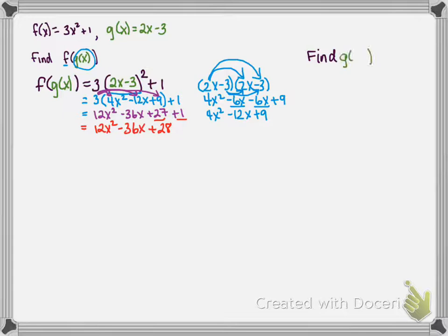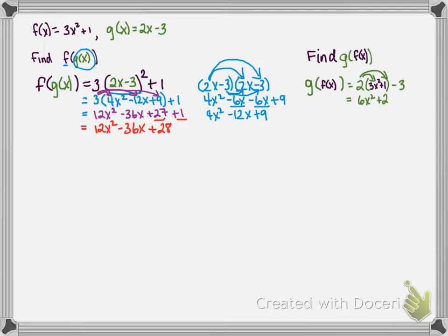Let's find g of f of x. Here we start with the g function and substitute f of x in for x. We write 2 times (3x squared plus 1) minus 3. Distributing: 2 times 3x squared equals 6x squared, and 2 times 1 is plus 2, with the minus 3 still present. So 6x squared plus 2 minus 3 equals 6x squared minus 1. Therefore g of f of x equals 6x squared minus 1. Notice these are not the same compositions.